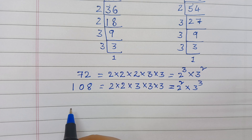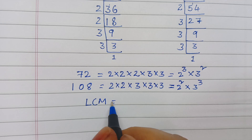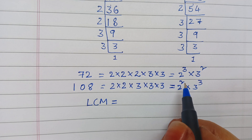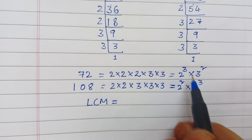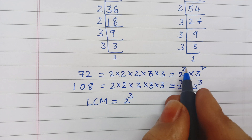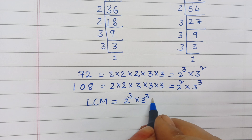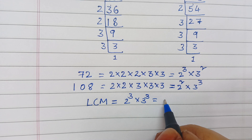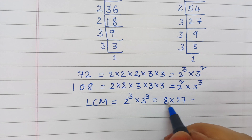Now find the LCM and HCF. LCM means the product of highest powers of common factors. The highest power of 2 here is 2 power 3, and the highest power of 3 is 3 power 3. So we take those highest powers for the LCM. 2 cube means 8, and 3 cube means 27.